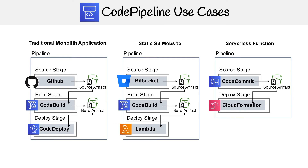Moving on — let's say you're hosting a marketing website on static S3. You could build a code pipeline for that. Your source could be Bitbucket, which outputs a source artifact that goes into CodeBuild. CodeBuild uses whatever tool you're using — for example, Gatsby and the JAMstack to generate static pages. You then output the static pages into a build artifact, pass it to a Lambda function, and that Lambda uploads it to the correct S3 bucket and invalidates the cache on CloudFront. That is that pipeline.